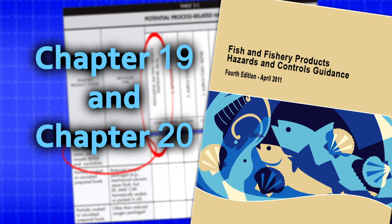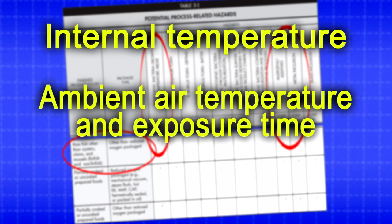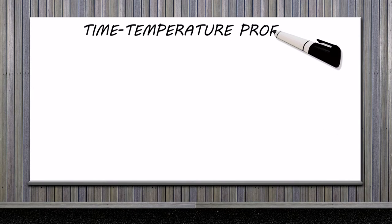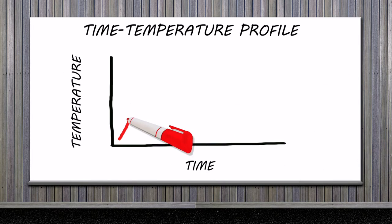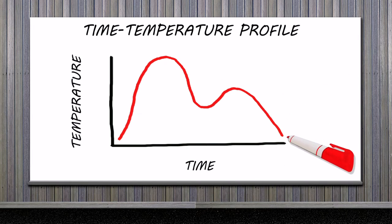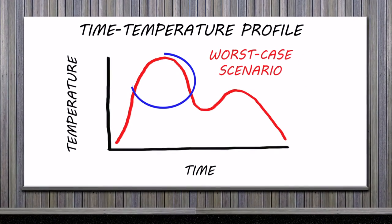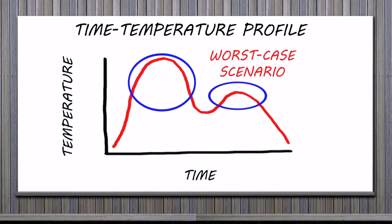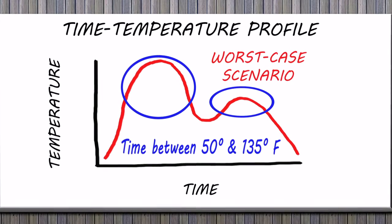This processor does an assessment to evaluate internal product temperature, ambient air temperature, and exposure time, and uses the data to develop a time-temperature profile. A time-temperature profile is a graphic representation of cumulative time and temperature exposures to unrefrigerated conditions. It should represent the worst-case scenarios — the most time that you can reasonably expect product to be exposed to temperatures between 50 and 135 degrees Fahrenheit during unrefrigerated processing.